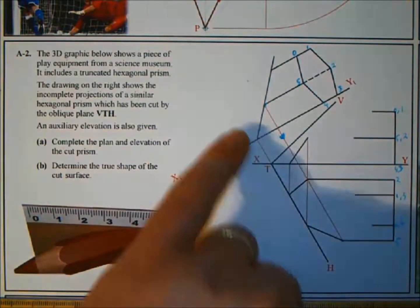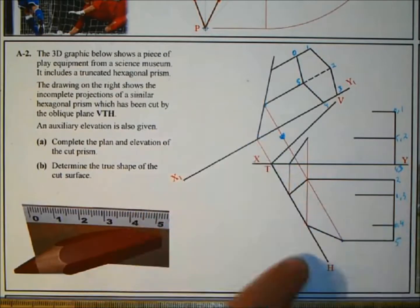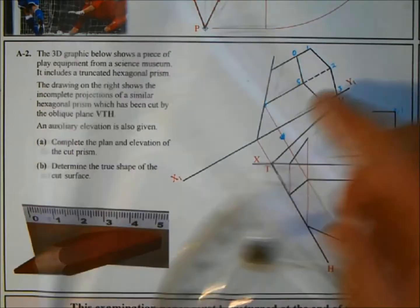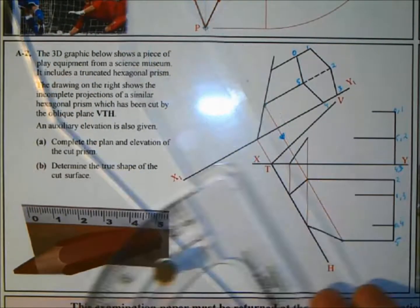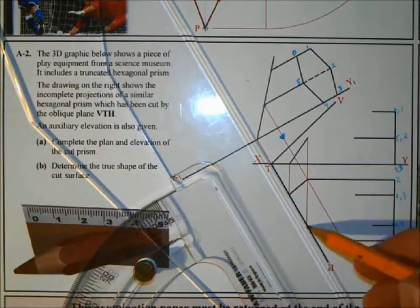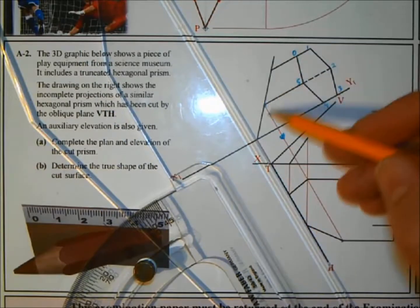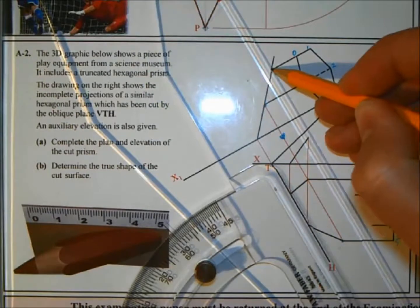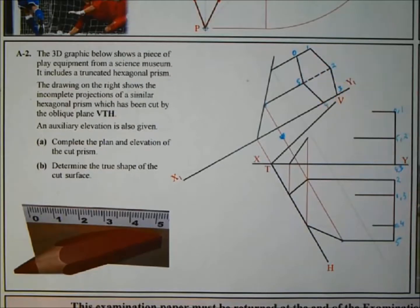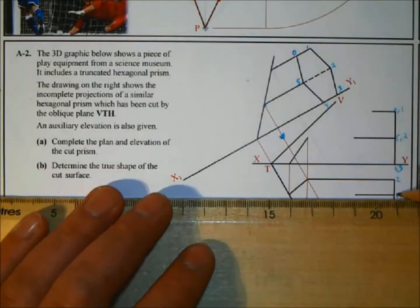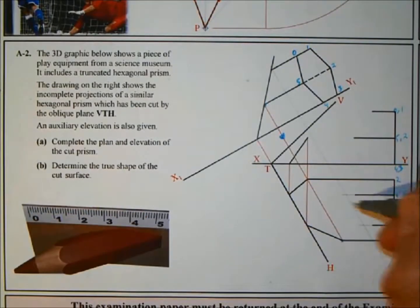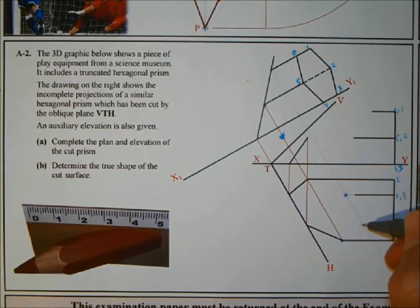We need to project back from the auxiliary elevation at the same angle as the horizontal trace. I'm going to set up that angle quickly so I can repeat it for all my points. That's the angle — where the oblique plane cuts through all of them. We need to bring this one down, so zero and one, they're at the top here.